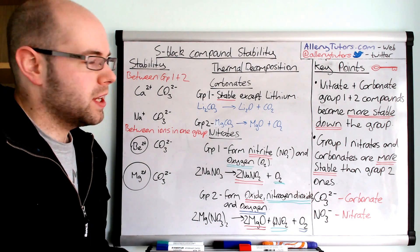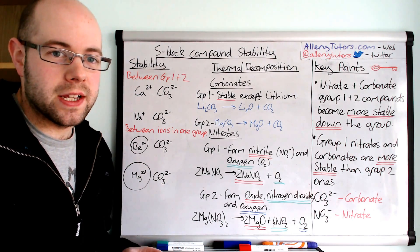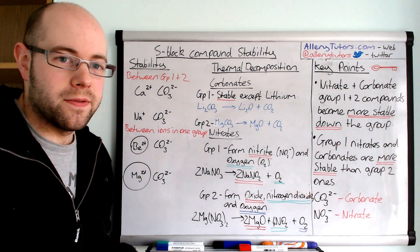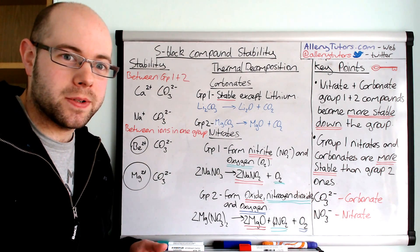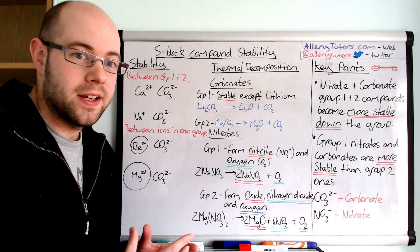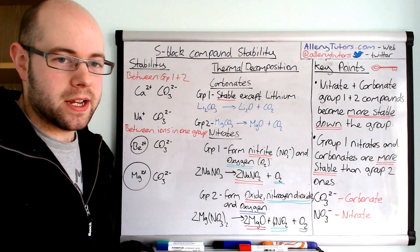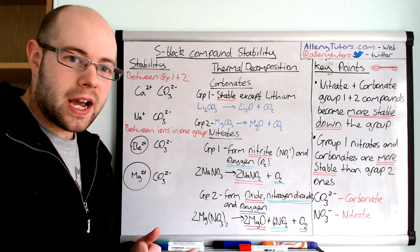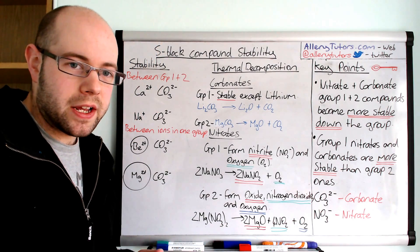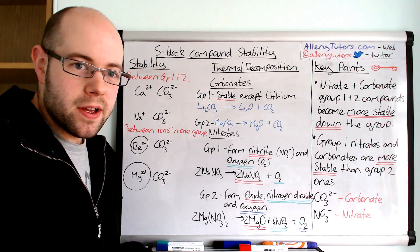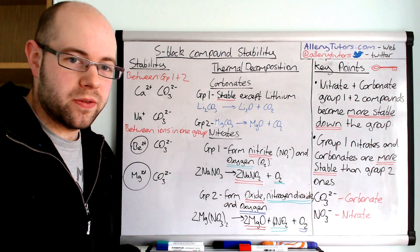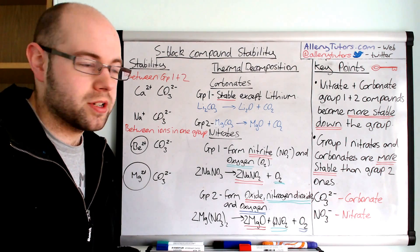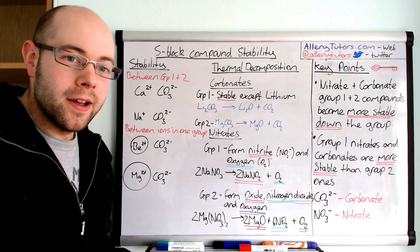A final point: how do you know how stable these compounds are? It's quite simple. For carbonates, you time how long it takes for the carbonate to produce carbon dioxide — you can test for carbon dioxide by bubbling the gas through limewater, which will turn it cloudy. For nitrates, you see how long it takes to form oxygen (which relights a glowing splint), NO2 (a brown gas that you'll see), or the solid oxide. The more stable your carbonate or nitrate, the longer it will take to form these products.